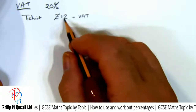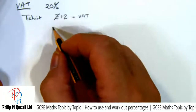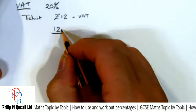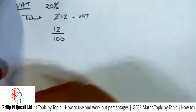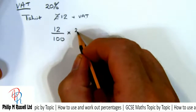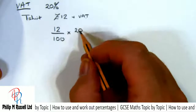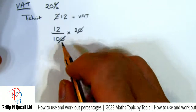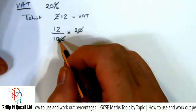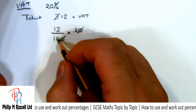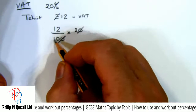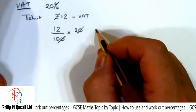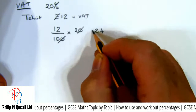We could work out what 20% of £12 is. First, find 1% by dividing by 100, then multiply by 20. We can divide by 10 — that gives 1.2 — and 1.2 times 2 is £2.40. We then add that on to the original £12, giving £14.40.